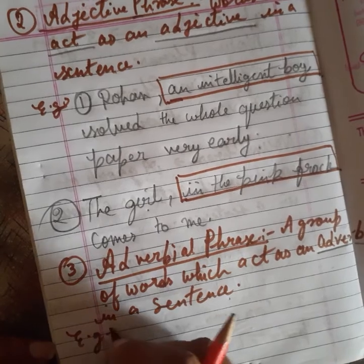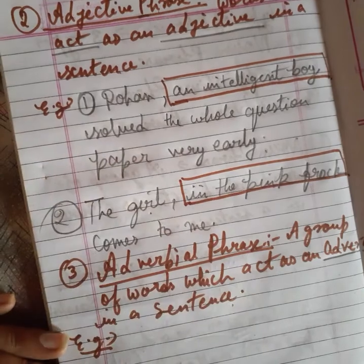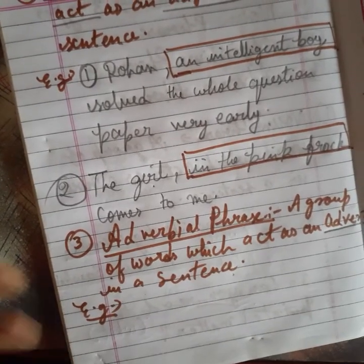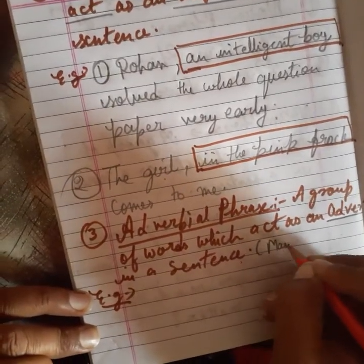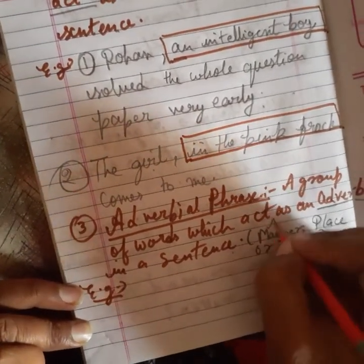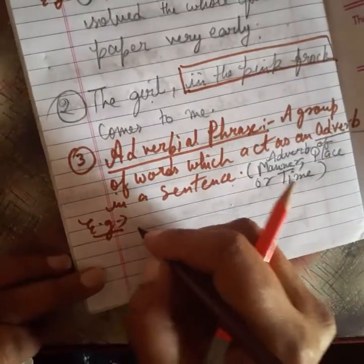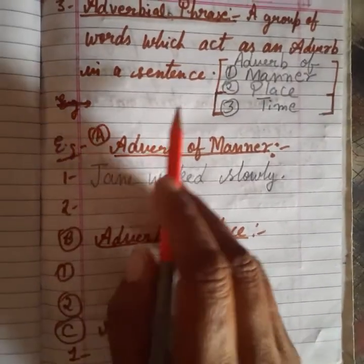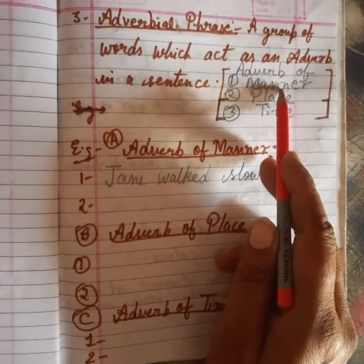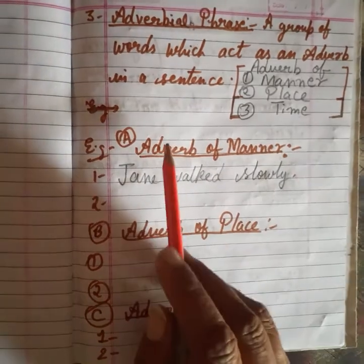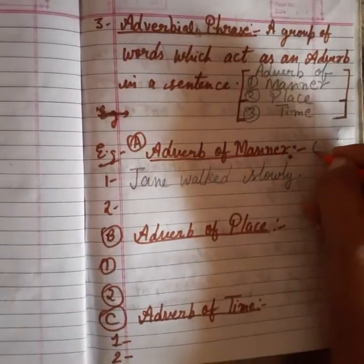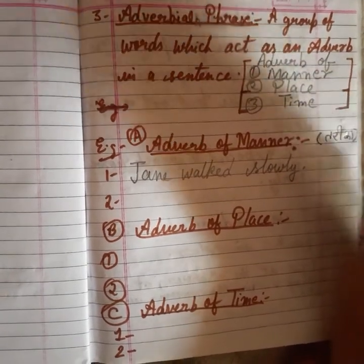Adverb mainly तीन types के होते हैं: adverb of manner, adverb of place, और adverb of time। इन्हीं से हम adverbial phrase पहचानेंगे। जब adverb की बात करते हैं तो adverb में 'how', 'where', और 'when' करके answer मिलते हैं। जैसे: 'Jane walked slowly' — how Jane walked? Jane slowly walk करती है।